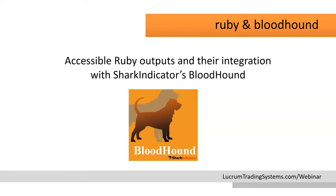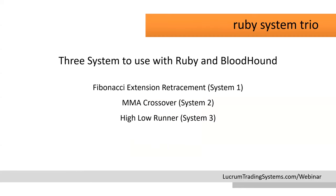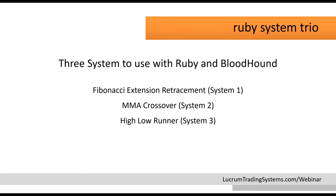With Ruby and Bloodhound, I've created the Ruby System Trio — three independent systems to use with Ruby and Bloodhound. We'll have the Fibonacci extension retracement as System 1, an MMA crossover as System 2, and the High-Low Runner as System 3. Now I just want to go into Ruby here and demonstrate what it looks like, how you can use it, and some of the different functionalities. I have a standard 10-minute chart and I'm going to apply Ruby by going to Indicators, scrolling down until you find LTS Ruby, and clicking Apply.